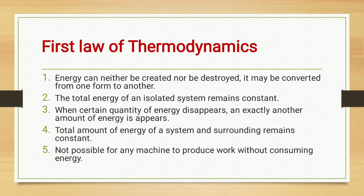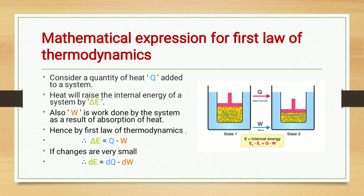Now let's discuss the mathematical expression for the first law of thermodynamics. Consider a quantity of heat Q added to a system — heat will raise the internal energy of a system by ΔE. Also, W is the work done by the system as a result of absorption of heat. Hence by the first law of thermodynamics, ΔE = Q − W. If changes are very small, then dE = dQ − dW, where the small 'd' denotes small changes.